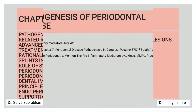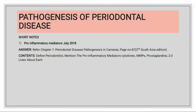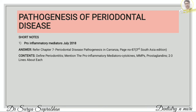Coming to the first chapter — pathogenesis of periodontal disease — the short note question is on pro-inflammatory mediators. For this, please refer chapter 7, periodontal disease pathogenesis in Carranza, page number 87. You have to define what is periodontitis and then mention the pro-inflammatory mediators. The most common are cytokines, MMPs, and prostaglandins. You have to write at least 2 to 3 lines about each of them.